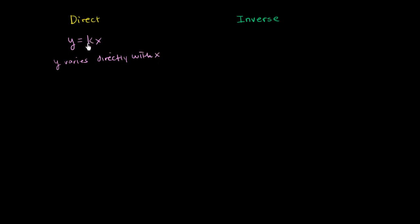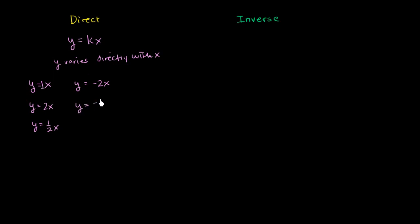If this constant seems strange to you, just remember, this could be literally any constant number. So let me give you a bunch of particular examples of y varying directly with x. You could have y = x (where the constant is 1), y = 2x, y = 1/2 x, y = -2x — we are still varying directly — y = -1/2 x, y = π·x, y = -π·x. Any constant times x means we are varying directly.